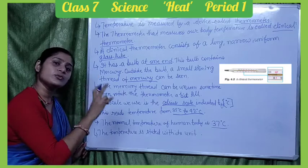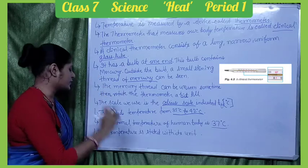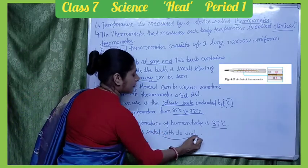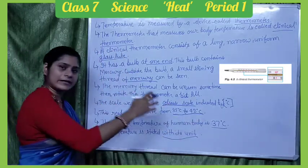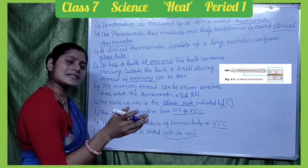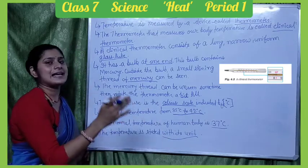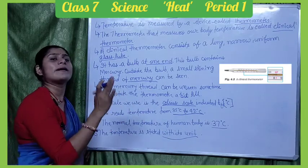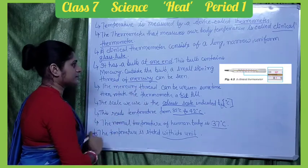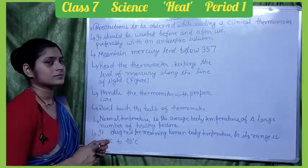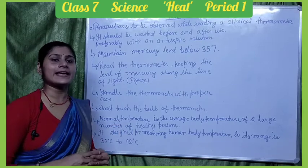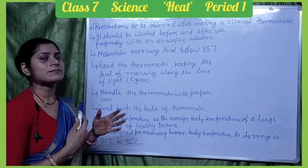Celsius is the unit of temperature. The temperature is stated with its unit — for example, 37°C, 38°C, 39°C, 40°C. We always add degrees Celsius as the unit of temperature.